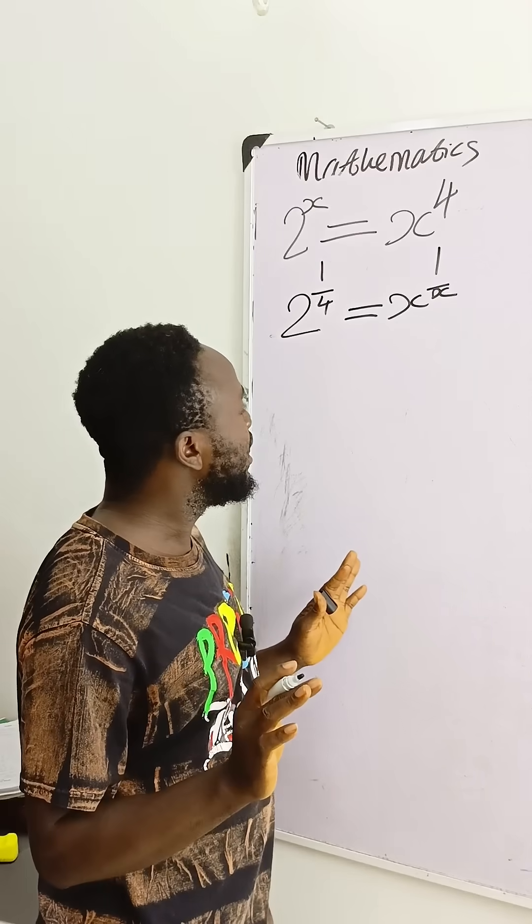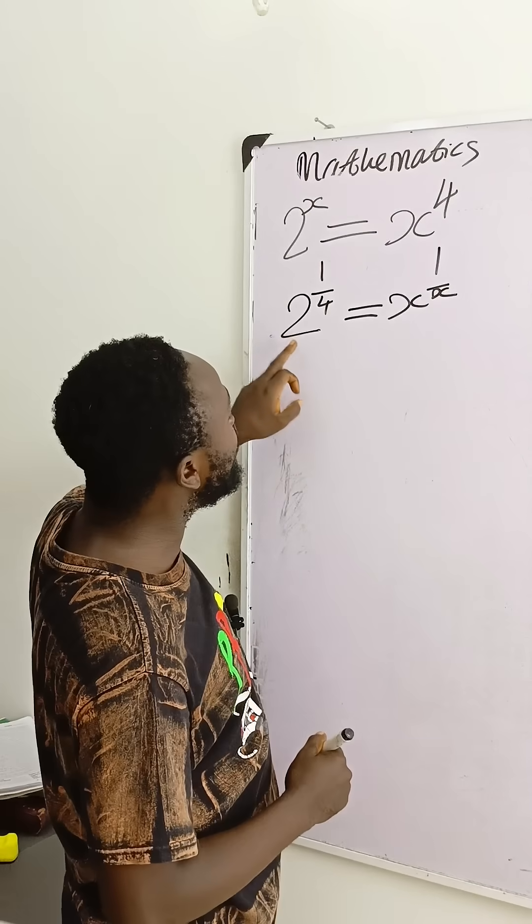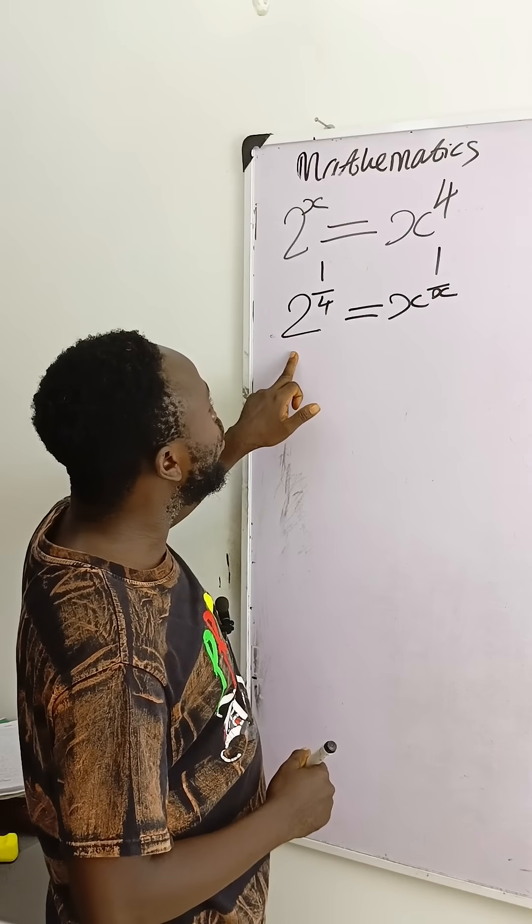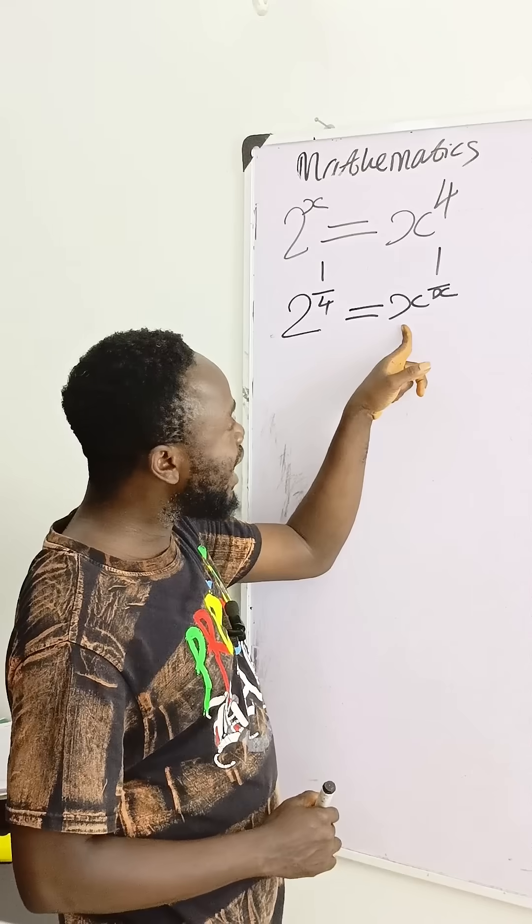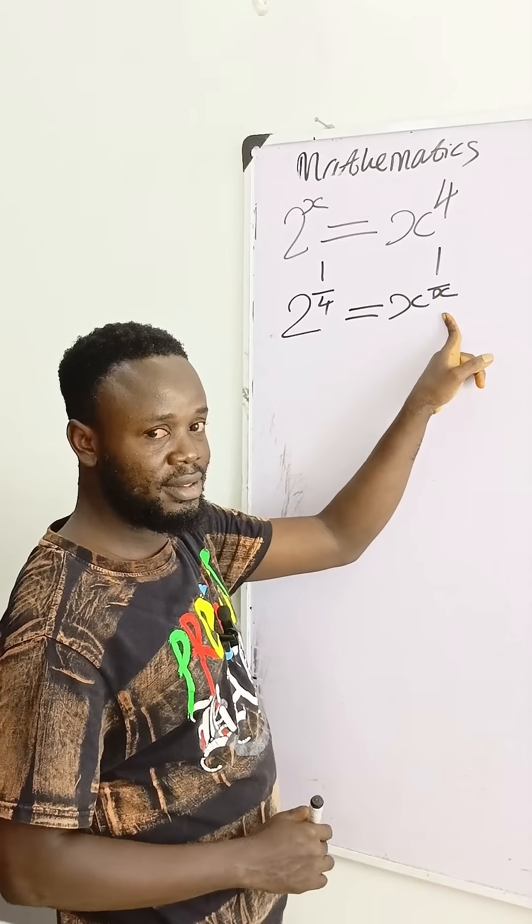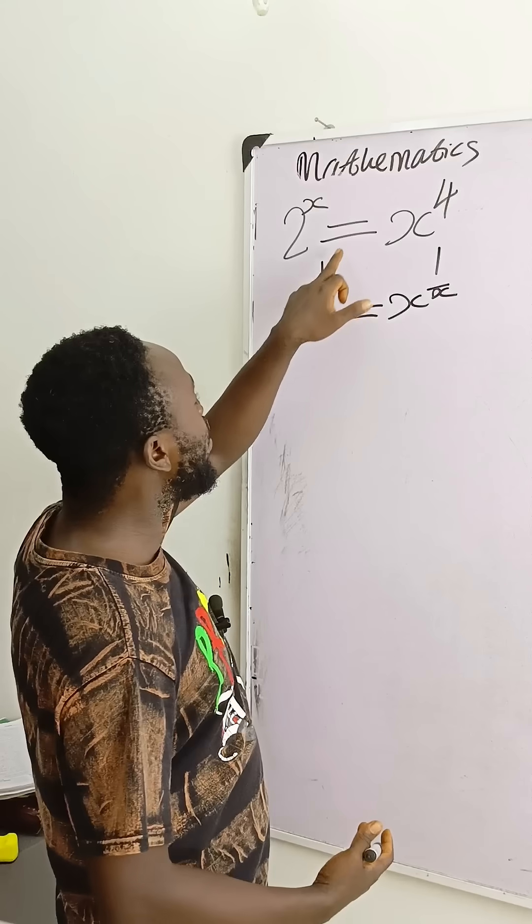Then at this point I will now think of what power I can raise 2 to, to give me something of this nature. Because here, x raised to power 1 over x is what we have on the right hand side. Left hand side has 2 raised to power 1 over 4.